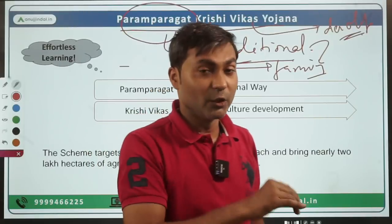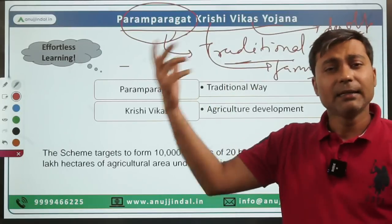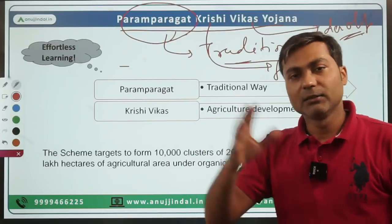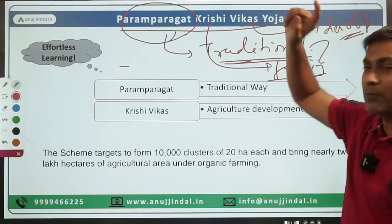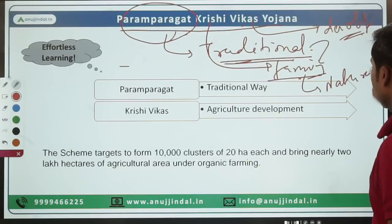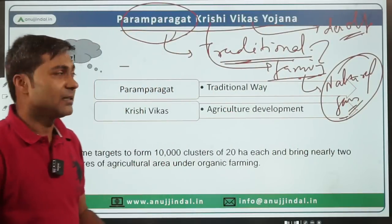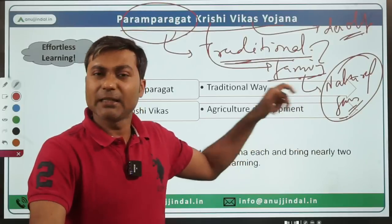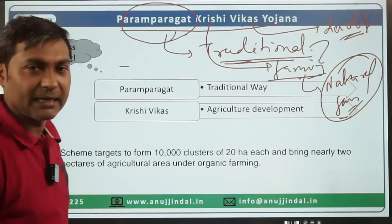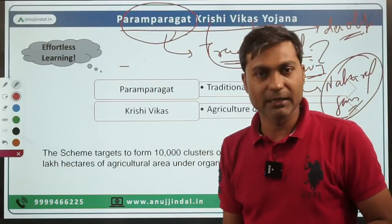Traditional farming means we were not using fertilizers or chemicals in agriculture — we were using natural fertilizers, meaning farming was entirely organic. So the scheme's objective is to promote traditional methods of farming, thereby promoting natural or organic farming. If you understand it this way, you don't need to read the objective again and again. This is effortless learning — understand it once properly and you don't need to re-read it.